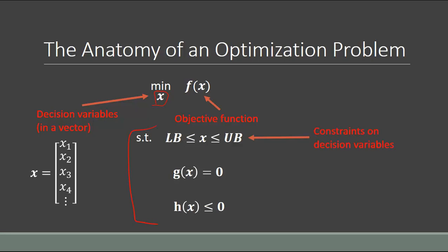The first type of constraints are bounds on the decision variables themselves. With x as a vector, LB (lower bound) and UB (upper bound) are also vectors, where each element corresponds to a particular decision variable. We also deal with equality constraints, where linear or nonlinear combinations of input variables must equal a certain value — for example, to obey laws of physics. We also deal with inequality constraints, where combinations of input variables must be below or above a certain value but can be anywhere in between.